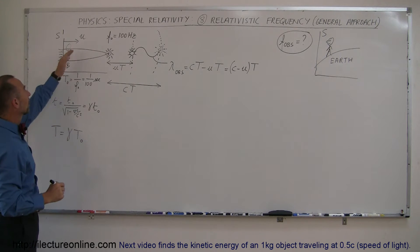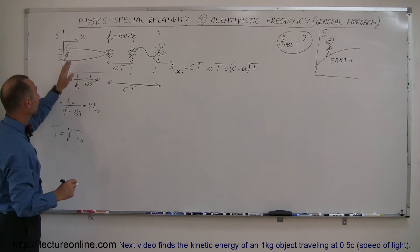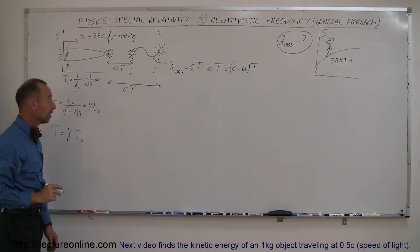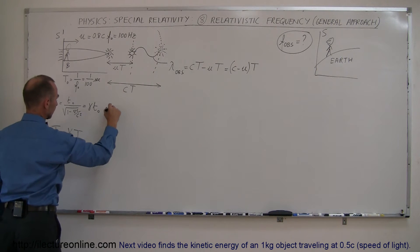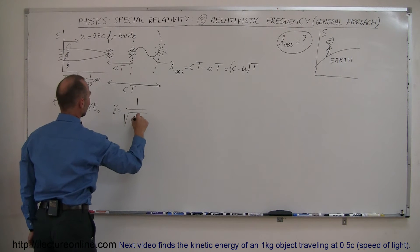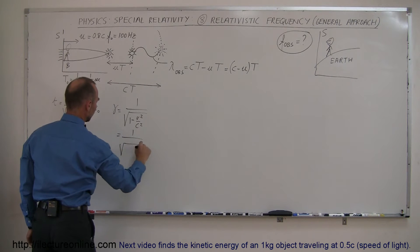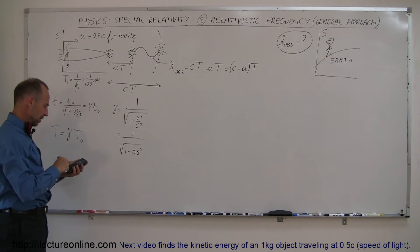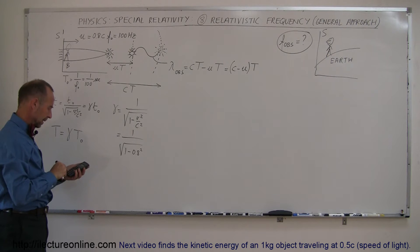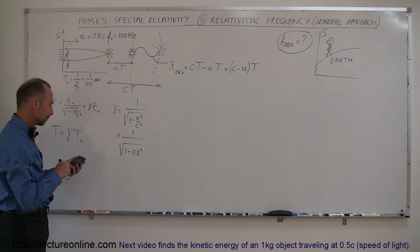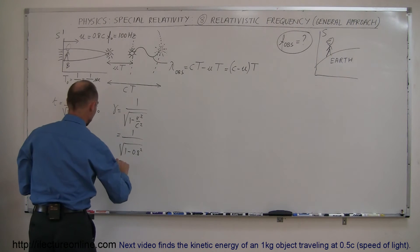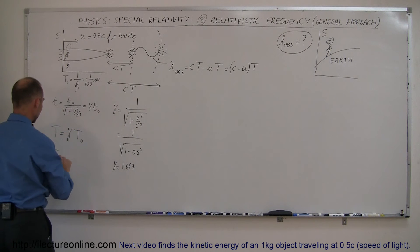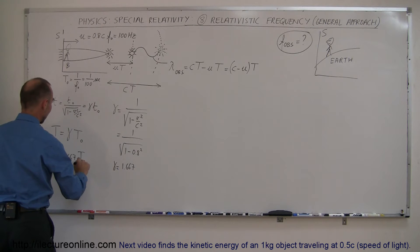Gamma depends upon the velocity of the spaceship. Let's plug in U equal to 0.8C and figure out what that is equal to. So gamma equals 1 over the square root of 1 minus V² over C², which gives 1 over the square root of 1 minus 0.8 squared. The C's cancel out. We square 0.8, subtract from 1, take the square root, then take the inverse. So gamma equals 1.667, which means the period as seen by an observer on Earth is 1.667 times the period seen by the observer on the spaceship.